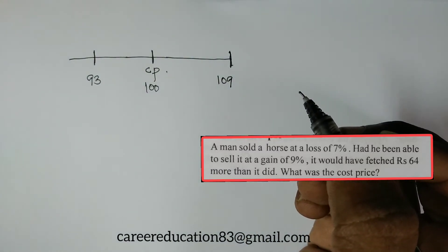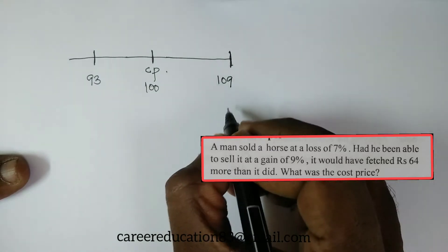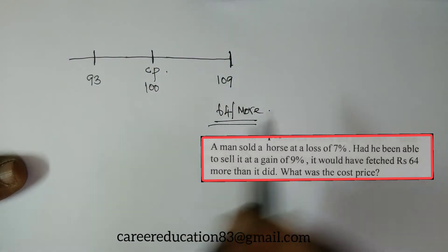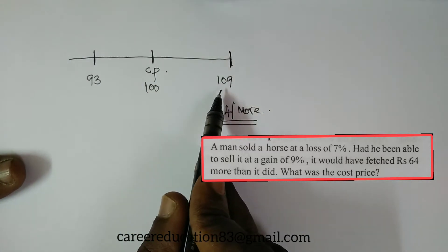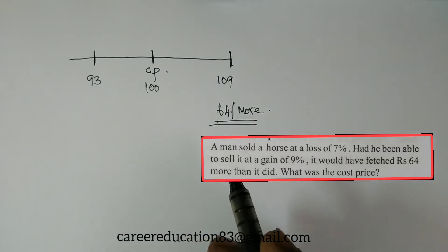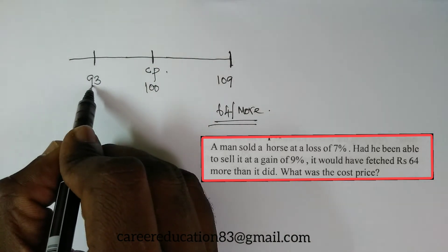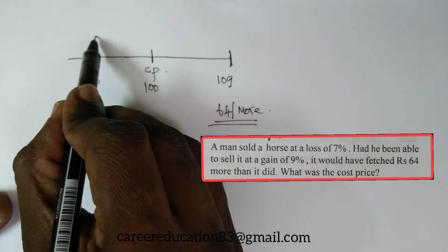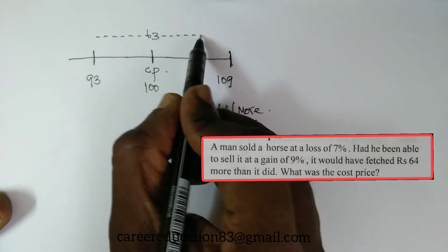It would have fetched rupees 64 more. So the difference between 109% and 93% is 16%. That 16% corresponds to rupees 64 more.